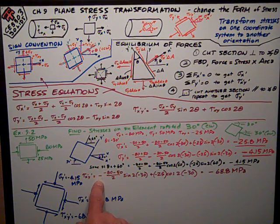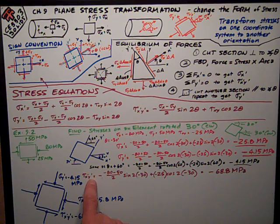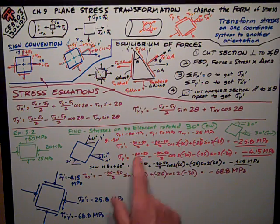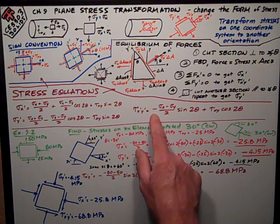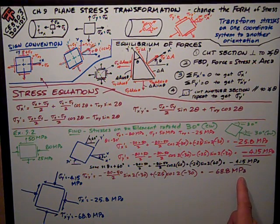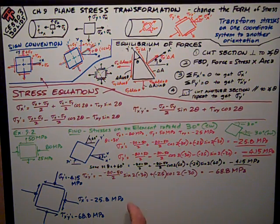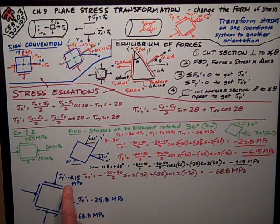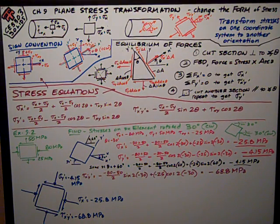Finally, I do the shear stress, x prime, y prime, and that's just plugging these numbers into this equation. And I come up with negative 68.8 megapascals. We're going to want you to show that on a stress element, and here is how that is done, what it looks like. Thank you.